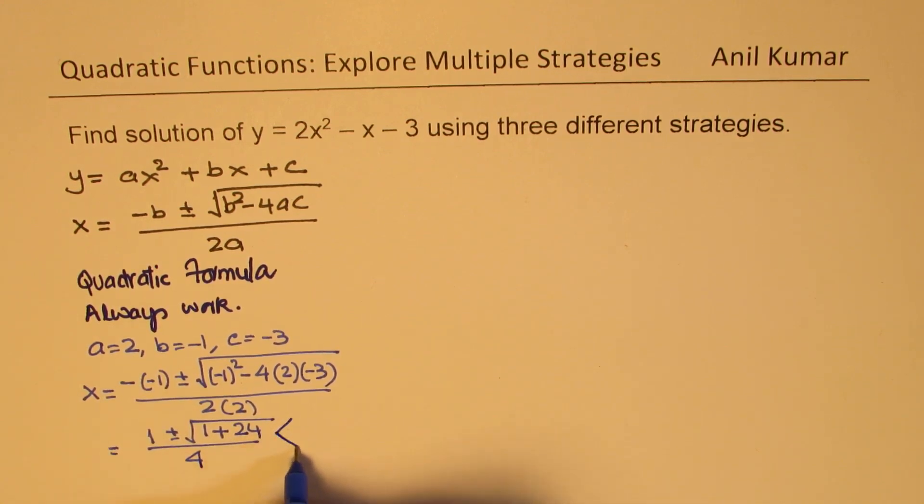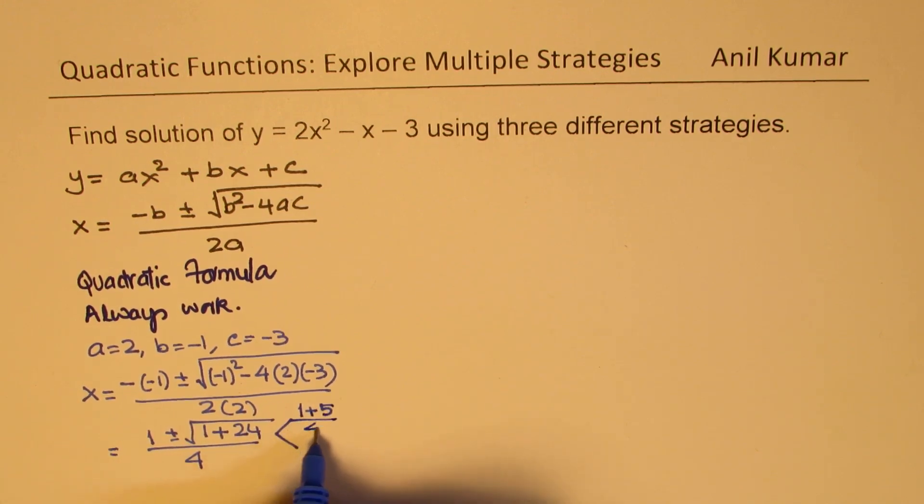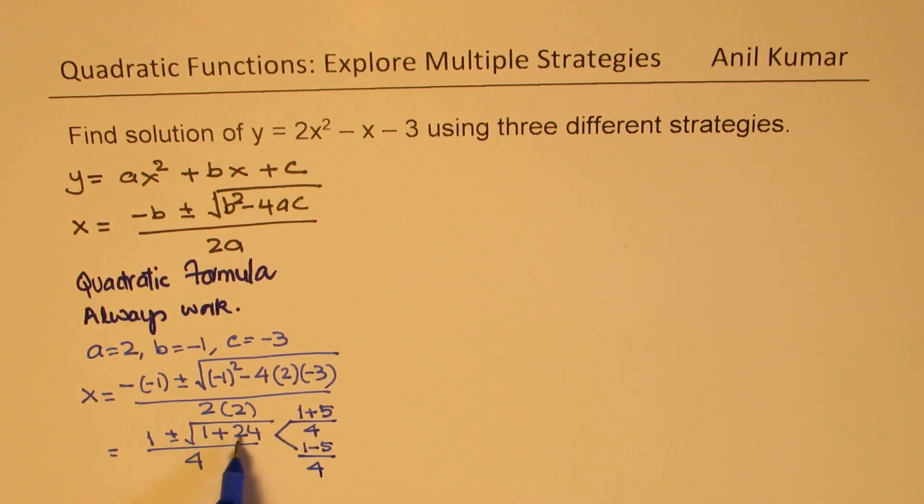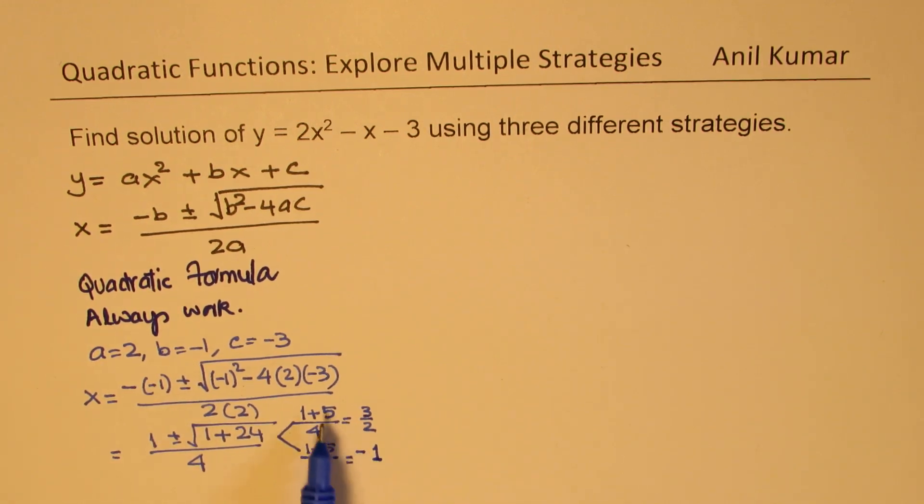So that gives you two possible solutions: 1 plus or minus square root of 25. So we get 1 plus 5 over 4, or we get 1 minus 5 over 4. 1 plus 24 is 25, square root is 5. So we get a solution which is 6 over 4 and that can be simplified to 3 over 2. In this case, we get negative 4 divided by 4 which is negative 1. So we can find two solutions for the given equation. One is 3 over 2 positive. The other one is minus 1.